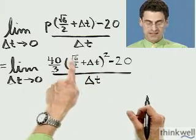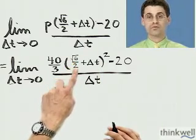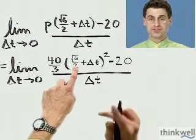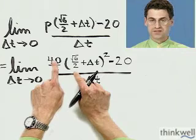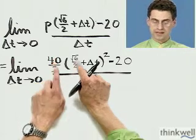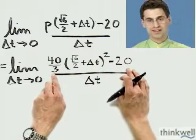The Delta T might be scaring you — you've only seen limits with x's — but it's okay, it's just a variable. The first thing I try is I just let Delta T equal zero and see what we get. When Delta T is zero, I have the square root of 6 over 2 plus 0 squared, so the radical disappears and I'm left with 6 over 4. Then 40 over 3 times 6 over 4: the 4 and 40 cancel leaving 10, and 6 over 3 is 2, so 2 times 10 is 20. That's 20 minus 20, which is 0, over 0 on the bottom. I have an indeterminate form — it needs more work.